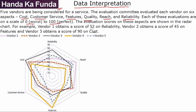Vendor 1 obtains a score of 52 on reliability. If you look at reliability, this is the spectrum of reliability, and vendor 1 has scored 52. It is a little above 50. The scale goes 10, 20, 30, 40, 50 — this is the line for 50 — then 60, 70, 80, and 90. So 90 is essentially the maximum that anyone has scored anywhere. We don't have the lines for 100.